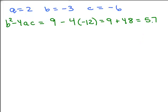Remember, b squared minus 4ac, or 57, is what's going to go underneath the square root in the quadratic formula. So the quadratic formula is negative b, which is, b is negative 3, so the opposite of that is 3, plus or minus the square root of 57. All over 2a. a is 2, so 2a is 4.